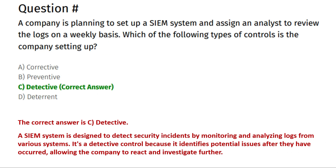The company is planning to set up a SIEM system and assign an analyst to review the logs on a weekly basis. Which of the following types of controls is the company setting up? Option A: corrective. Option B: preventive. Option C: detective. Option D: deterrent.